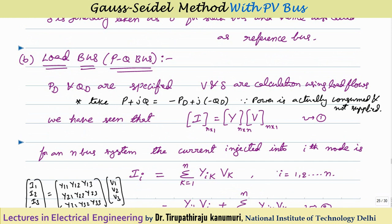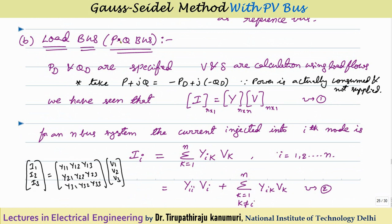Coming to the load bus: for a load bus we know the active and reactive power requirement, but we do not know the voltage magnitude or angle. V and delta are unknown, but PD (power demanded) and reactive power demanded are known. Since the load is consuming power rather than supplying it, whatever values of P and Q are given for a load bus must be taken with a negative sign. Please remember this because the power is actually consumed and not supplied.